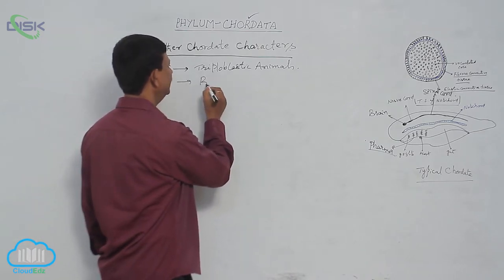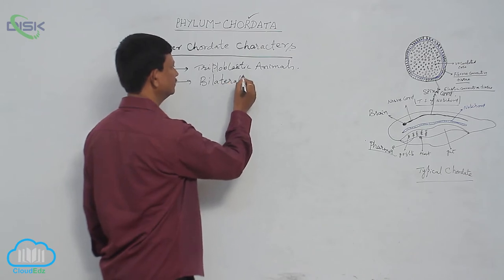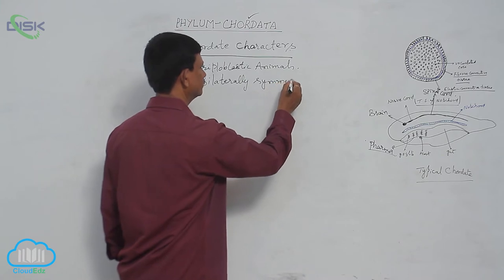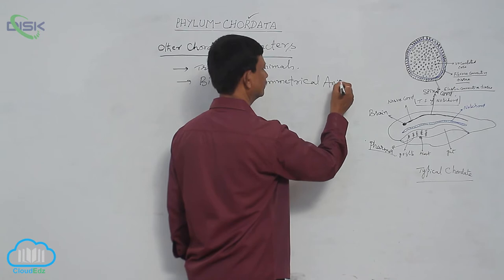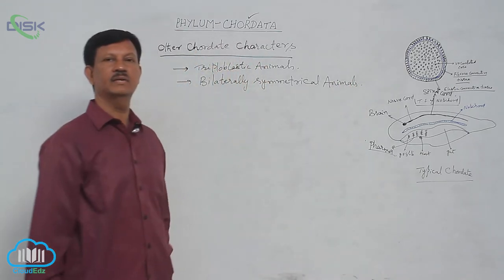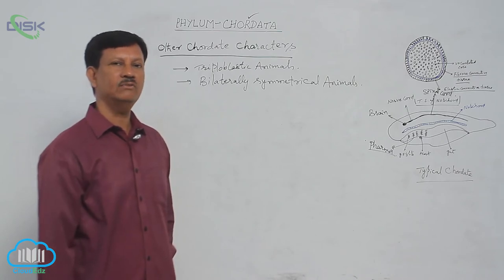They are bilaterally symmetrical animals. The chordate body is divided into two equal halves.